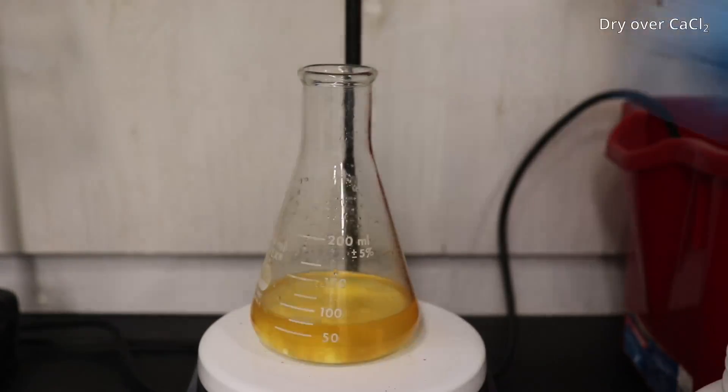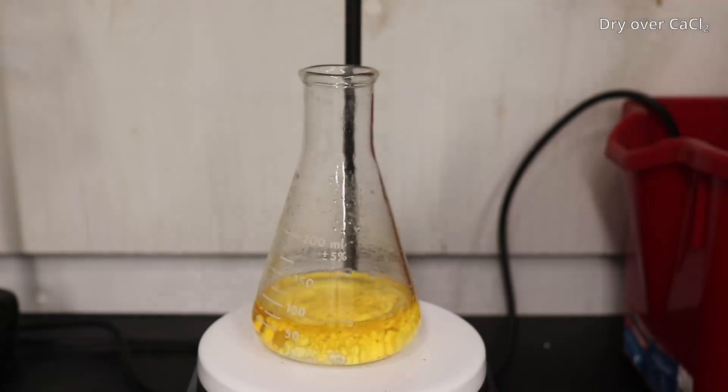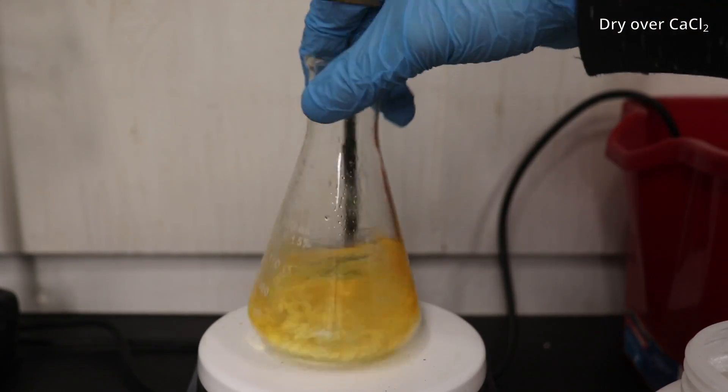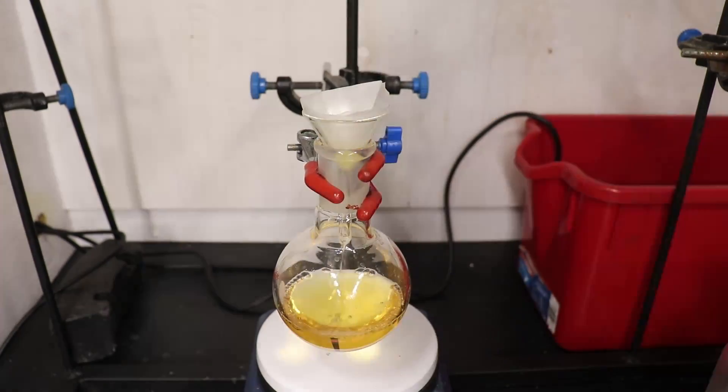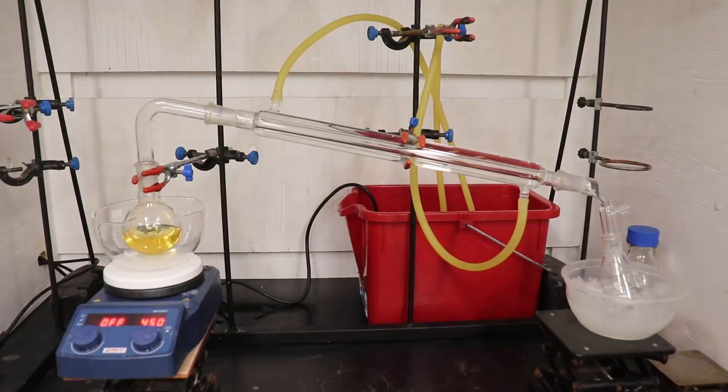The organic phase was drained off into an Erlenmeyer flask and then dried over anhydrous calcium chloride for about one hour. The solution was then decanted off and filtered, and then the ether was removed by simple distillation.